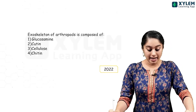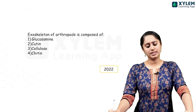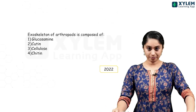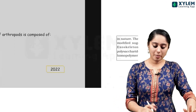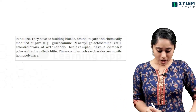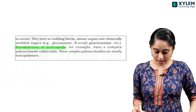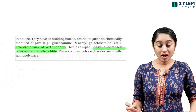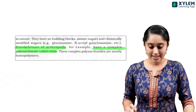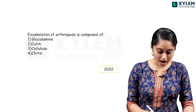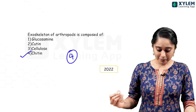In 2022, there is a question: the exoskeleton of Arthropods is composed of what? The exoskeleton of Arthropods has a complex polysaccharide called chitin — they have a chitinous exoskeleton. So the answer here will be chitin.